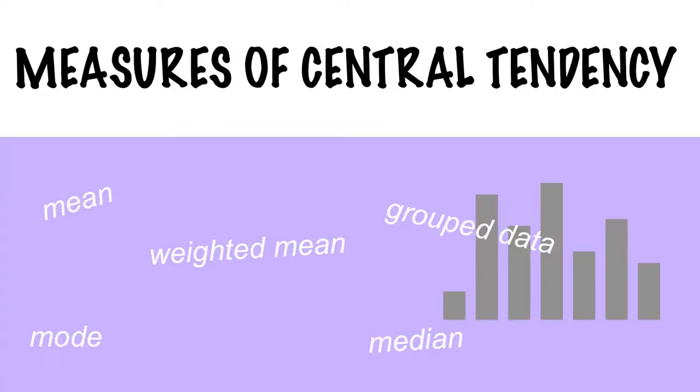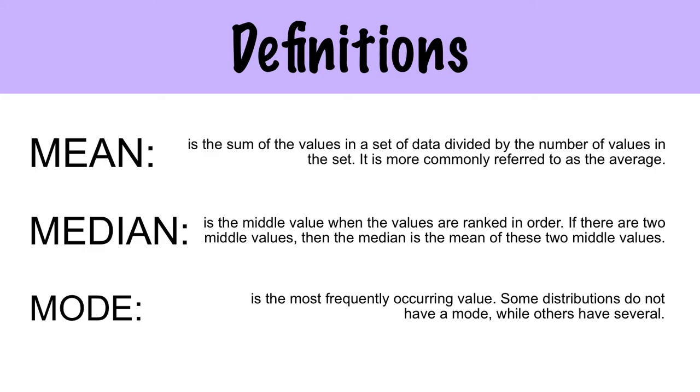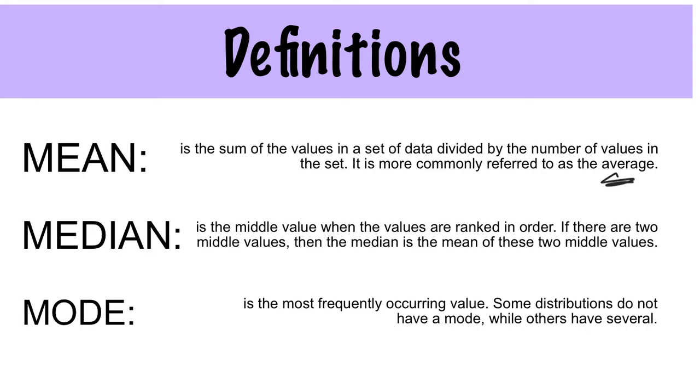Measures of central tendency. We're talking about a collection of data and looking at the middle of it. By definition, mean is the sum of values in a set of data divided by the number of values in the set. You probably know this as the average. The median is the one in the middle. And the mode is the one that occurs most frequently. Some distributions do not have a mode while others could have more than one.